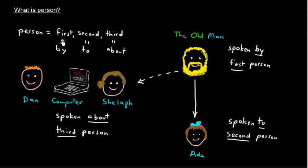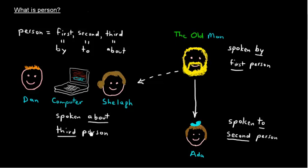You have to worry about person in quite a few pronouns and some forms of verbs. And we really don't talk about it much, but all nouns are actually in the third person. So any time you replace a noun, you replace it with a third person pronoun or use a third person form of a verb.